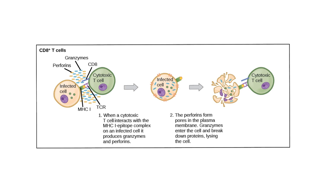Once a cytotoxic T cell is activated, it will form a clone of other activated cytotoxic T cells as well as memory cells. Those activated cytotoxic T cells can then bind to other MHC 1 antigen complexes that have the same type of antigen. They will start to recognize these infected cells, and the activated cytotoxic T cells will then release granzymes and perforins, which enter the cell, perforate the cell membrane, and cause the cell to lyse — basically die.